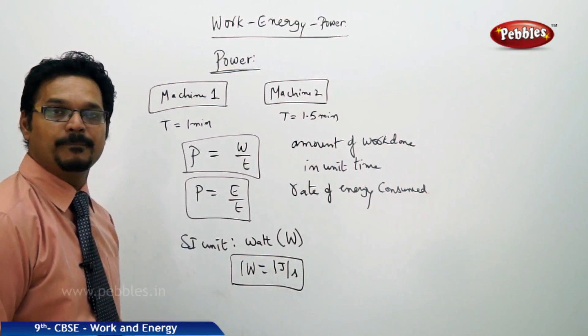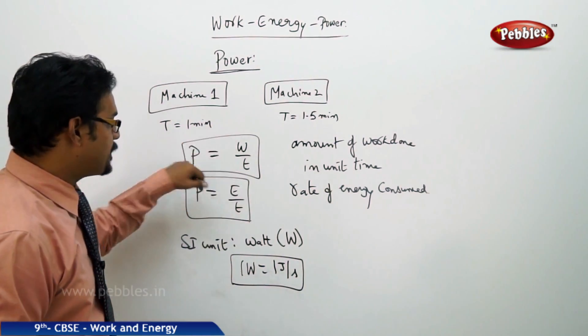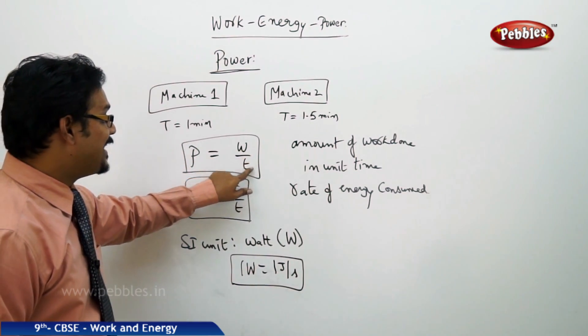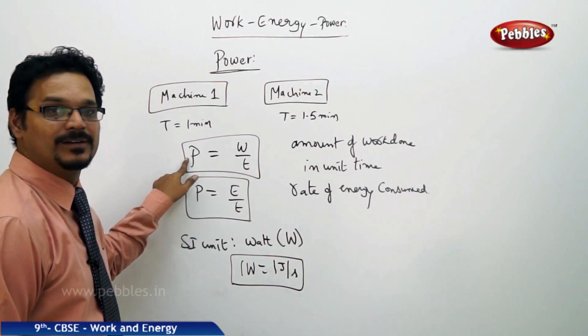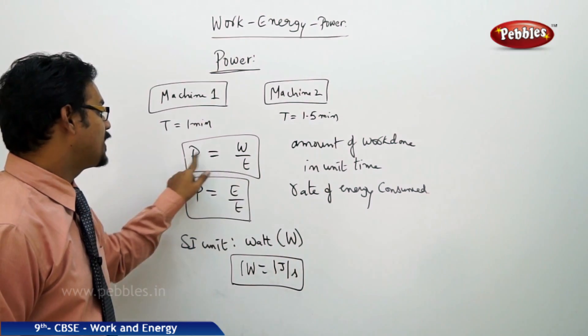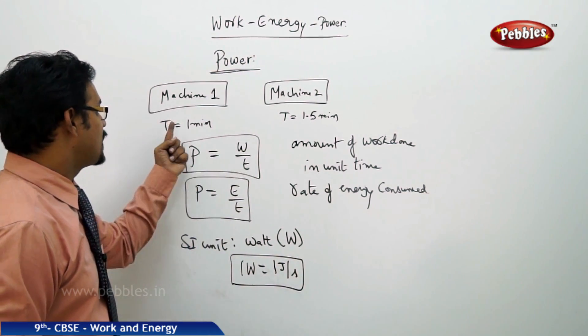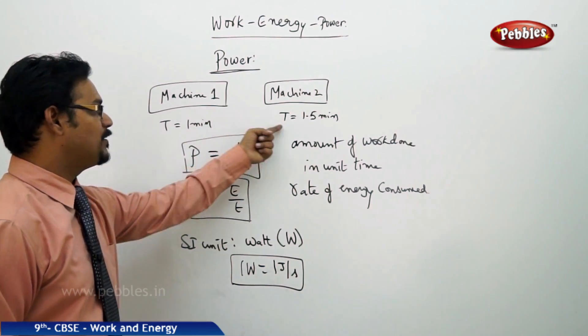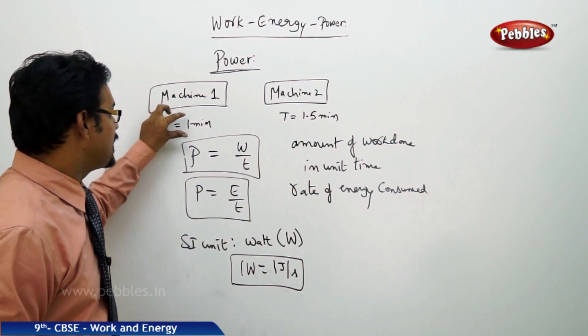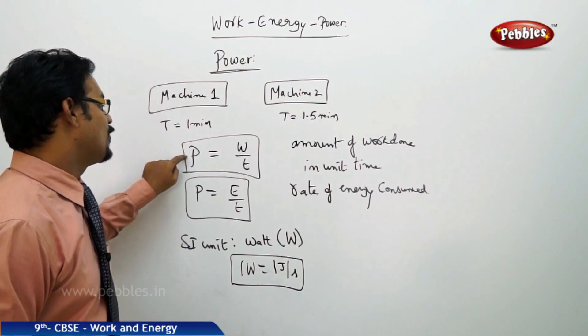That's the power formula. If you see the expression work by time, lesser the time, more the power, because power and time are inversely proportional. So less time means more power. That's why in the beginning example, this is less time, so we have more power for machine one.